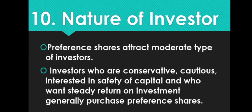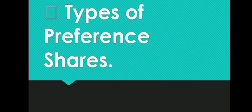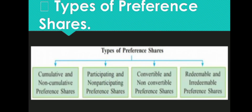Nature of investors: Preference shares attract moderate type of investors — jin logon ko safe returns chahiye aur risk bilkul nahi leni. Investors who are conservative, cautious, interested in safety of capital, and who want steady returns on investment generally purchase preference shares. Woh log jo bahut protective hain, jinka capital safe rehna chahiye aur jinhein returns jaldi chahiye — woh preference shares purchase karte hain.